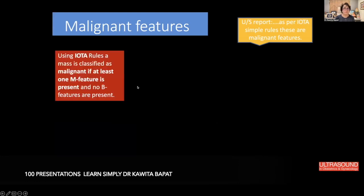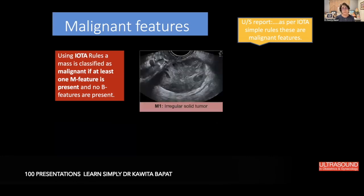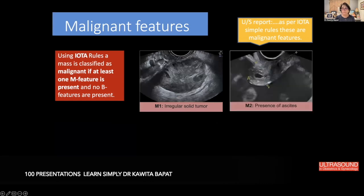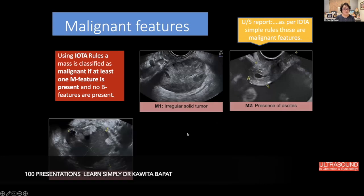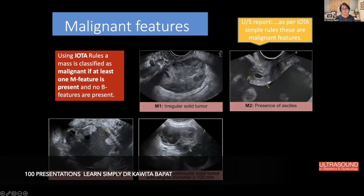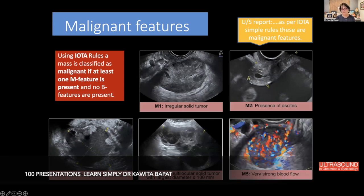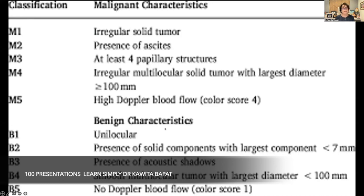M1 is an irregular solid tumor. M2 is the presence of ascites. M3 is at least four papillary structures within the mass. M4 is an irregular multilocular solid tumor with the largest diameter more than 100 mm. M5 is very strong blood flow on color Doppler. So M1 through M5 are the five malignant features.